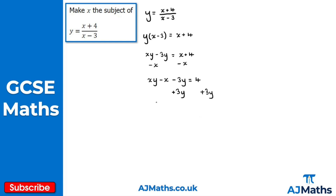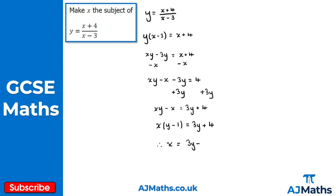Adding 3y to both sides gives xy - x on the left and 3y + 4 on the right. Now factor out x on the left hand side: x(y - 1) = 3y + 4. Finally, divide both sides by (y - 1), so x = (3y + 4) / (y - 1).